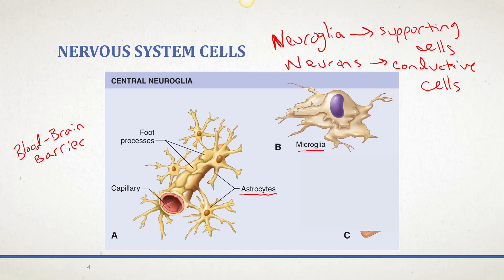The next type of cell is a microglia cell. A microglia cell is the immune cell of the central nervous system. Microglial cells are going to be major phagocytes — a phagocyte is any cell that's going to eat organisms, predominantly bacterial organisms that come in and cause infection. So microglia cells are the immune cells of your central nervous system.